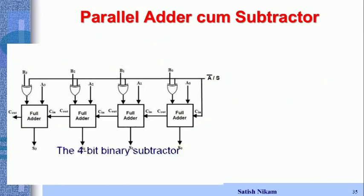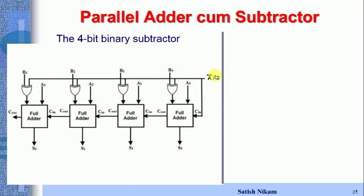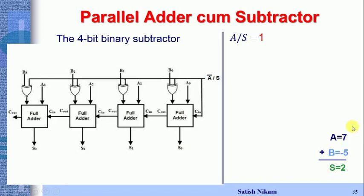Now we consider the subtractor example. For subtraction, /S = 1. We subtract 5 from 7. Using two's complement, we take the negative of B: find the two's complement of 5 by taking its one's complement and adding 1, which gives negative 5. Then we add negative 5 to positive 7.